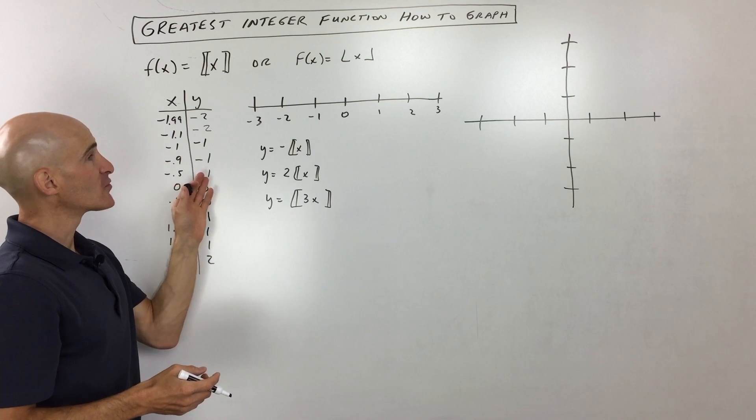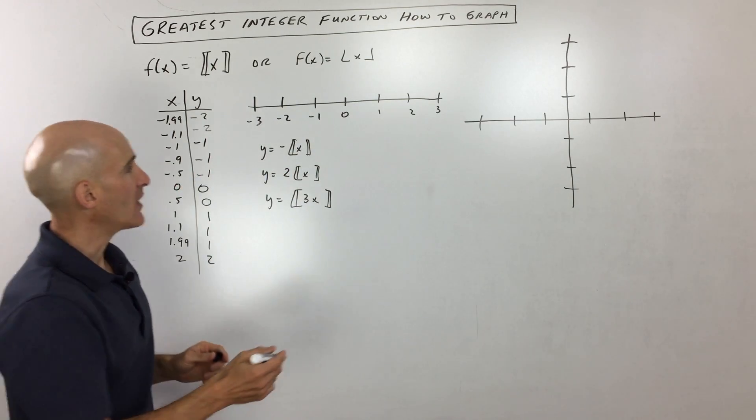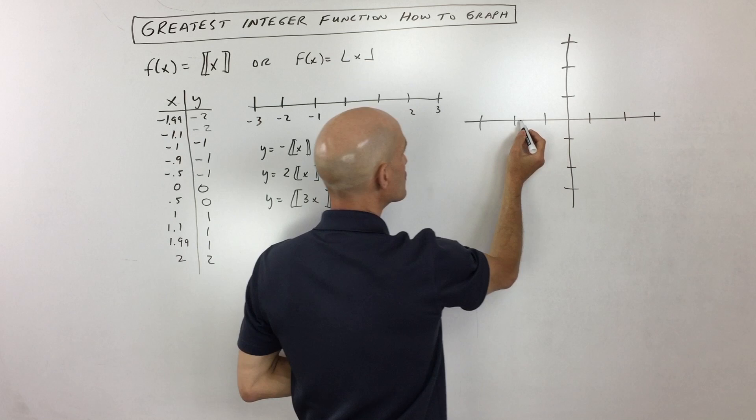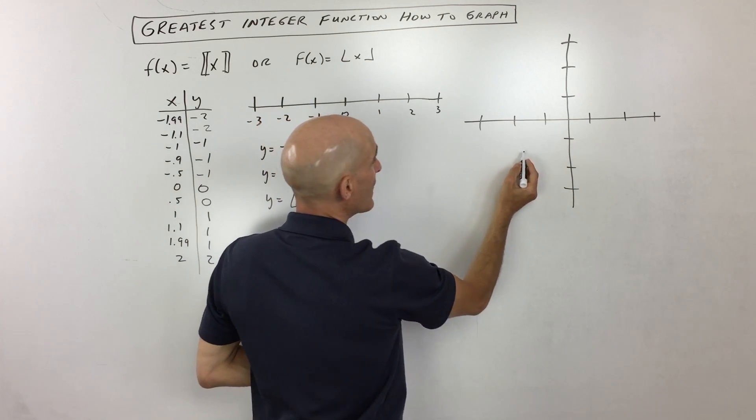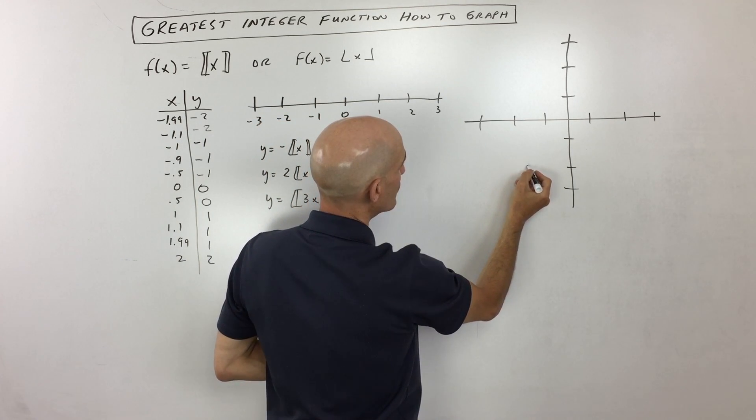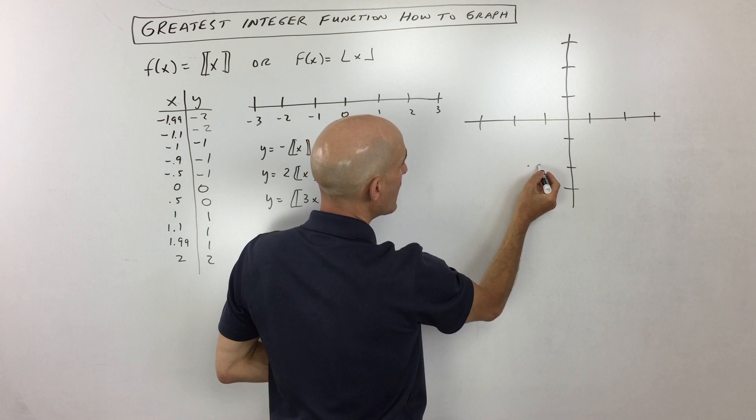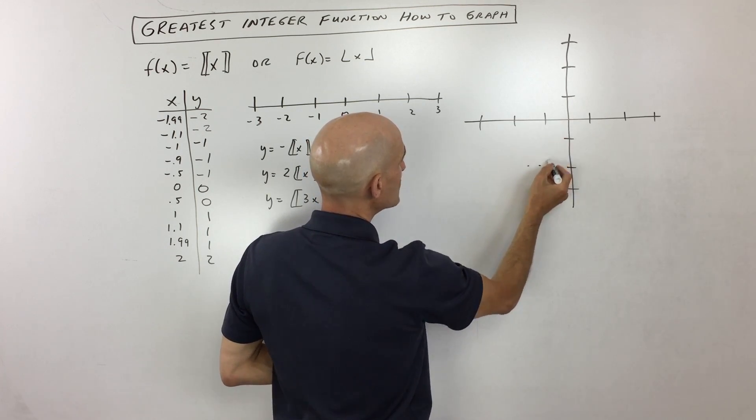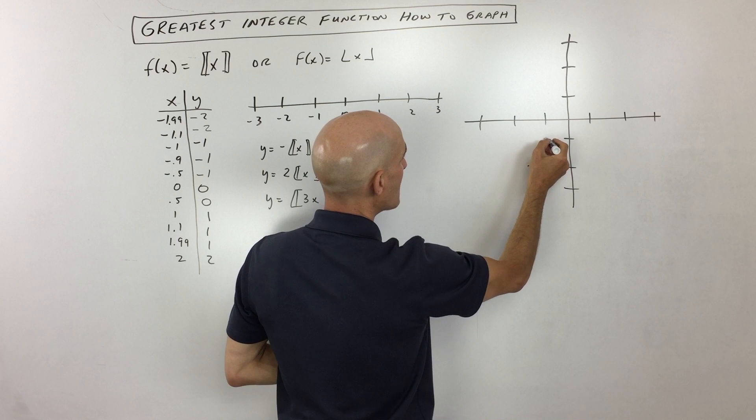So what we're going to do now is we're going to plot these over here on the graph. So at negative 1.99, which is right here, we said that we're at negative 2. So I'm going to put a point right there. Negative 1.1, we're over here at negative 2. As soon as we get to negative 1, it jumps up.